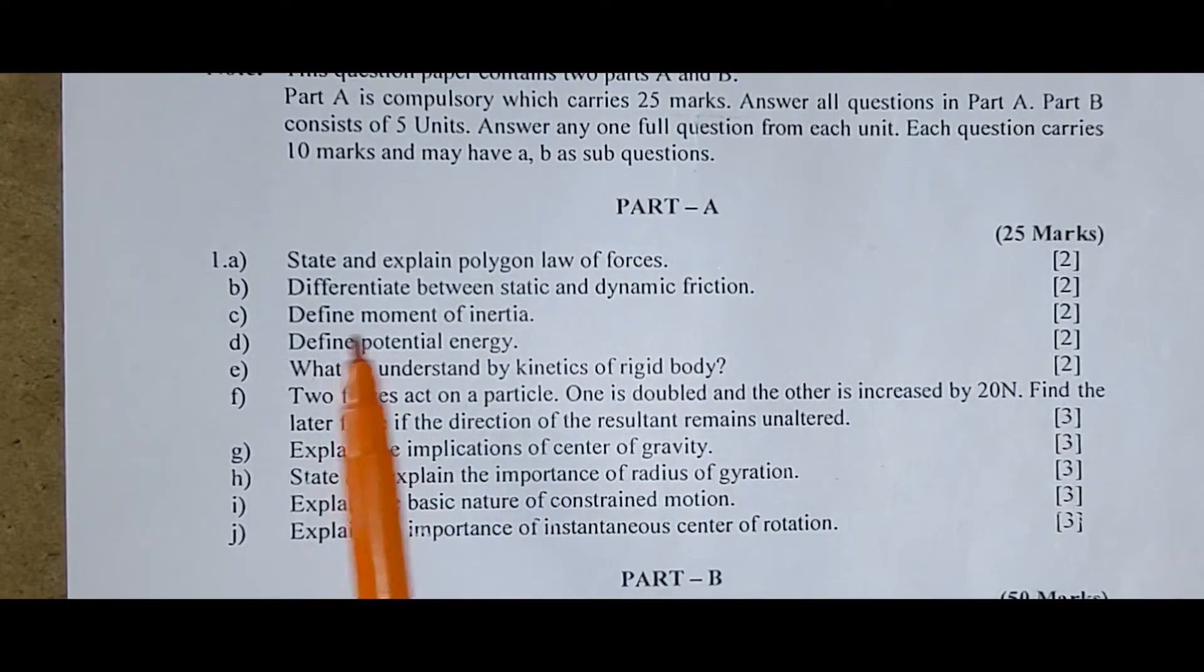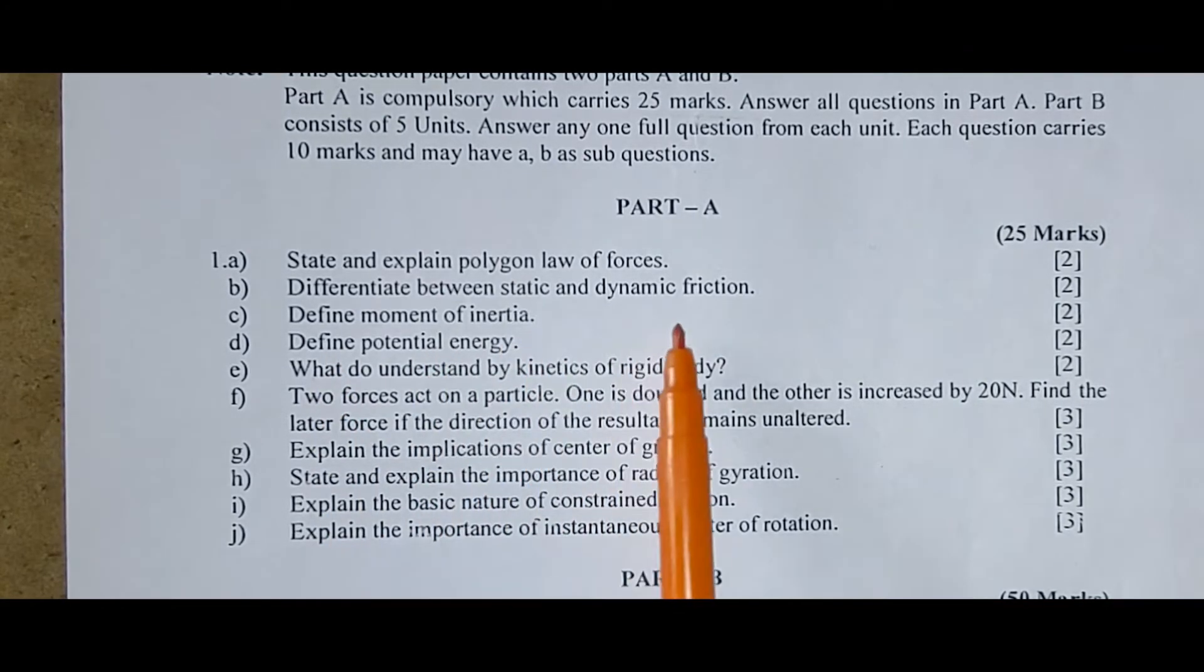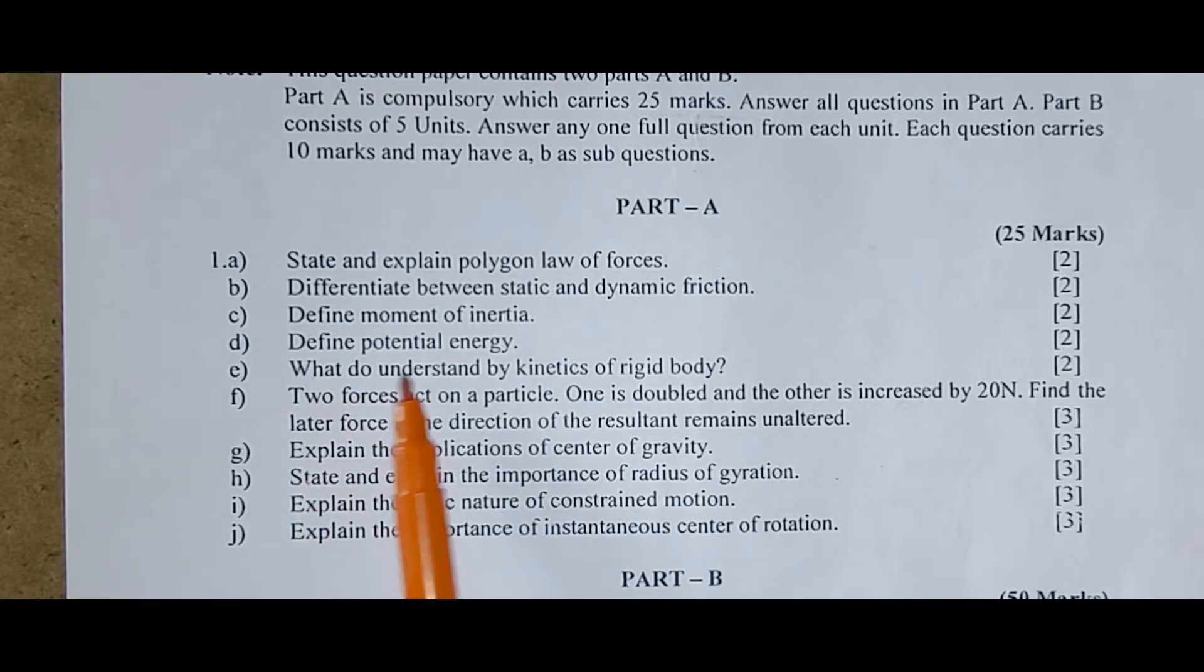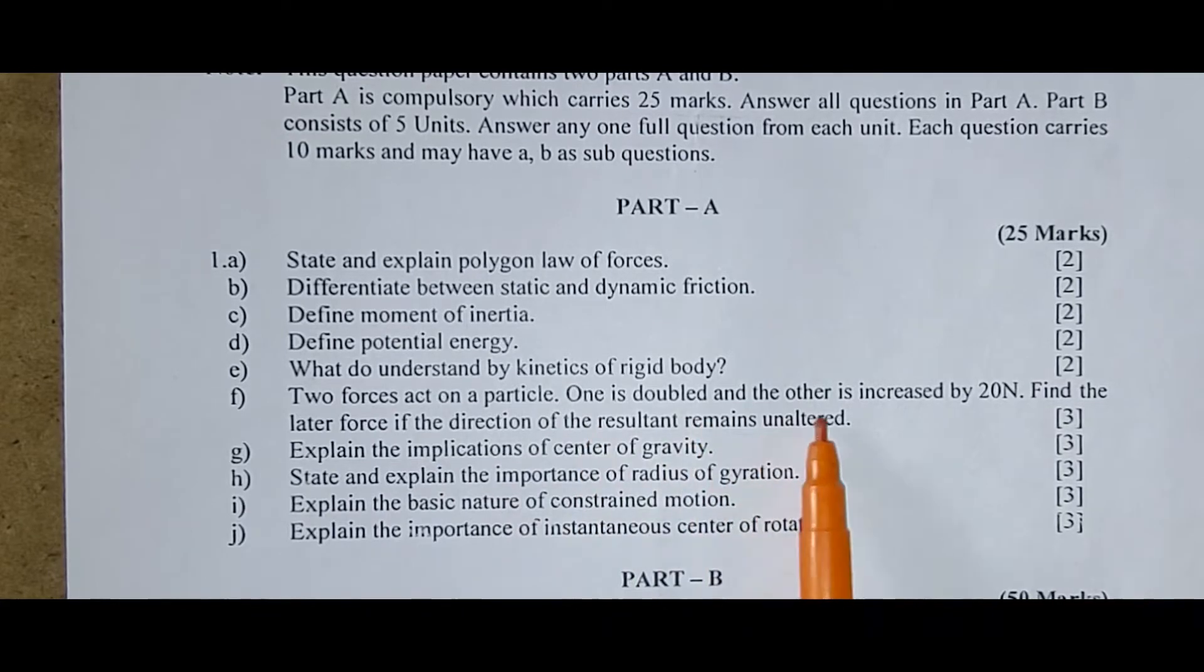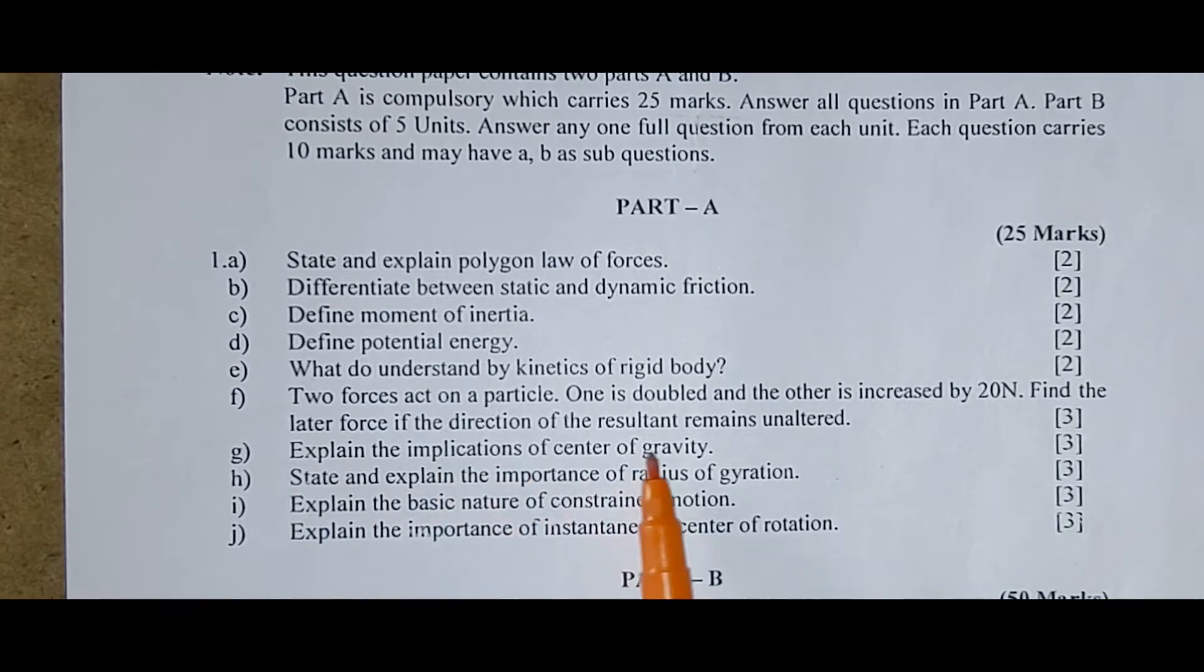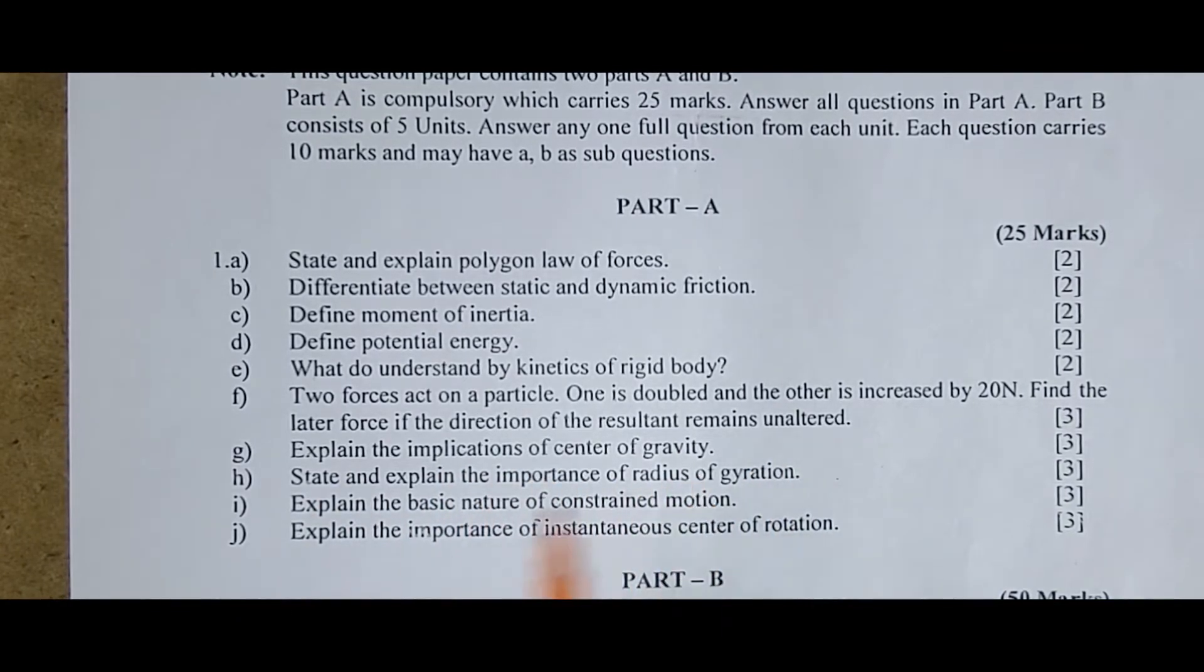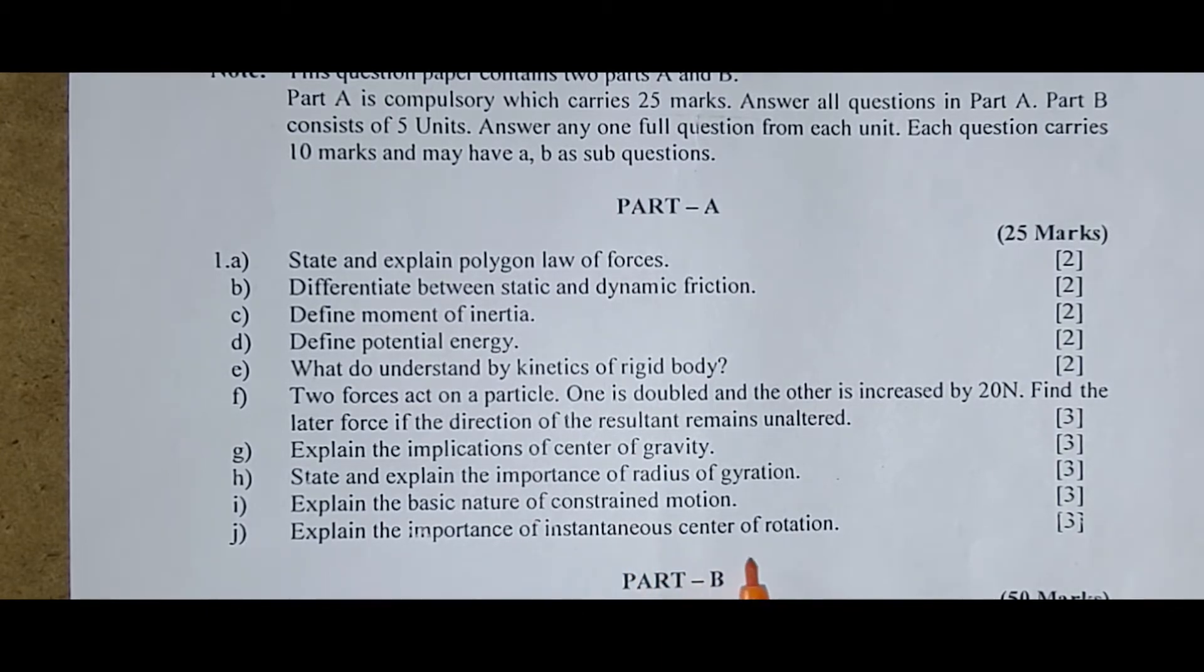Now we will start discussing this question. In this part here you can see, state and explain polygon law of forces, differentiate between static and dynamic friction, define moment of inertia, define potential energy, what do you understand by kinetics of rigid body, two forces act on a particle, one is doubled and other is increased by 20 N, find the later force if the direction of the resultant remains unaltered, explain the implications of center of gravity, state and explain the importance of gyration, explain the basic nature of constrained motion, explain the importance of instantaneous center of rotation.